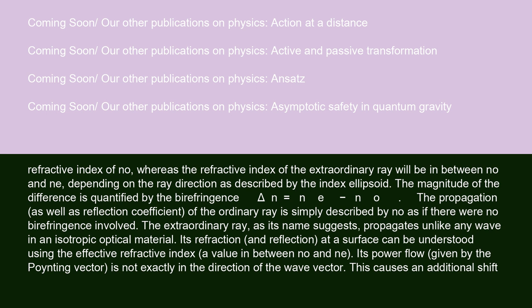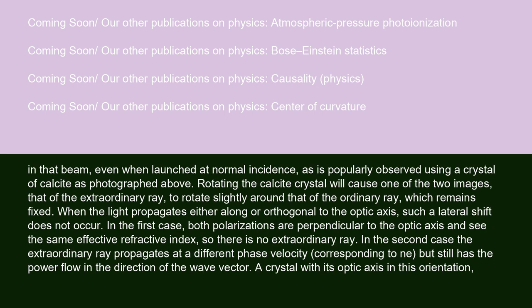This causes an additional shift in that beam, even when launched at normal incidence, as is popularly observed using a crystal of calcite as photographed above. Rotating the calcite crystal will cause one of the two images, that of the extraordinary ray, to rotate slightly around that of the ordinary ray, which remains fixed. When the light propagates either along or orthogonal to the optic axis, such a lateral shift does not occur.